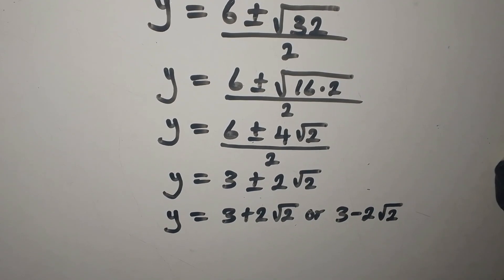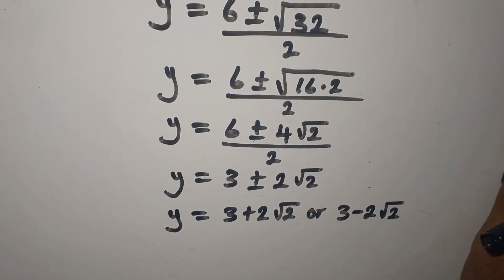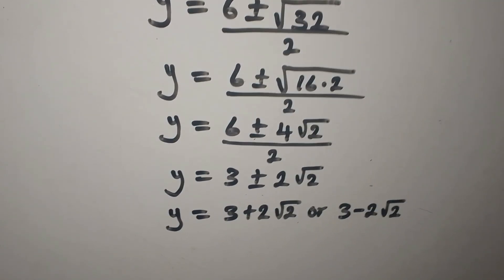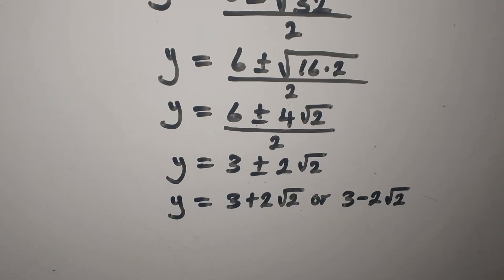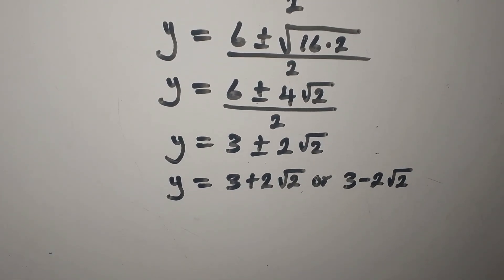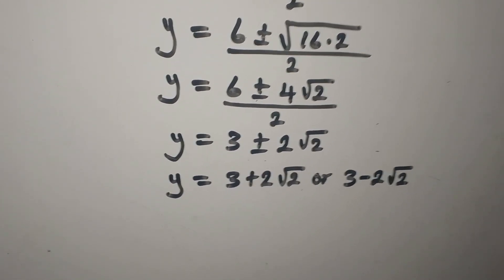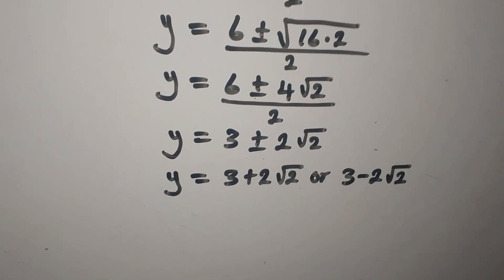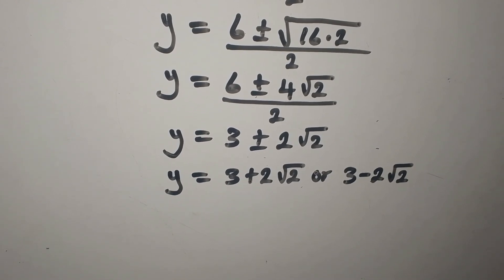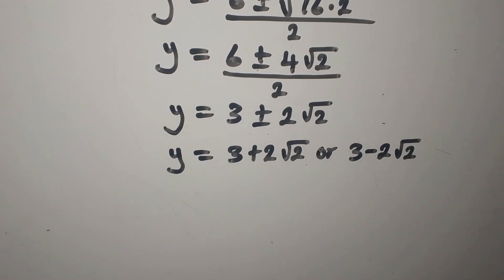So our two values of Y are: Y equals 3 plus 2 root 2, or Y equals 3 minus 2 root 2. Mind you, these are the values of Y, but we were looking for the values of X.